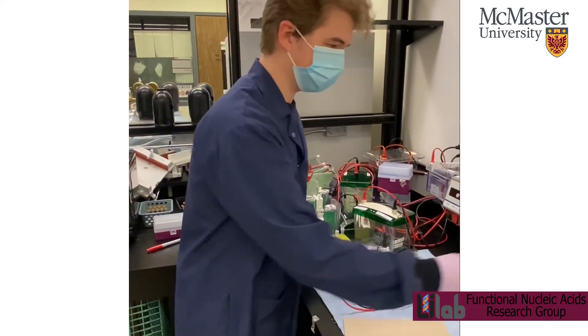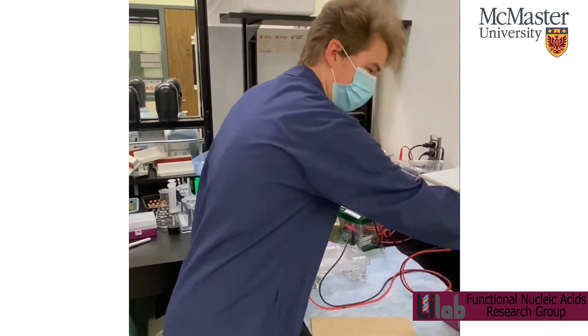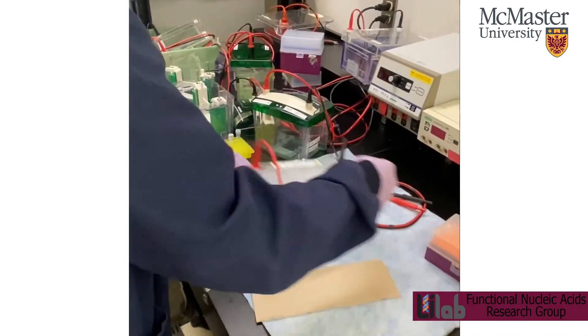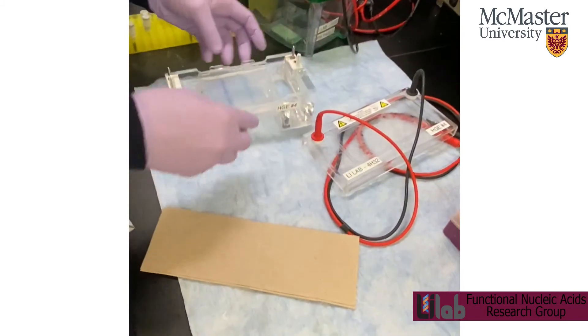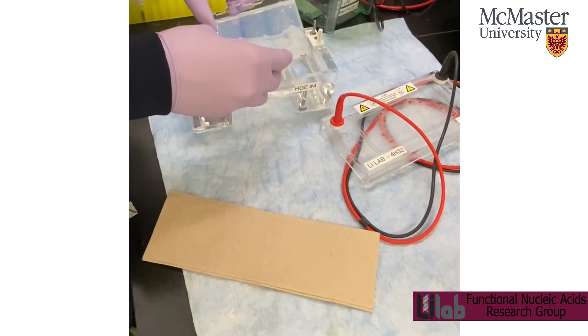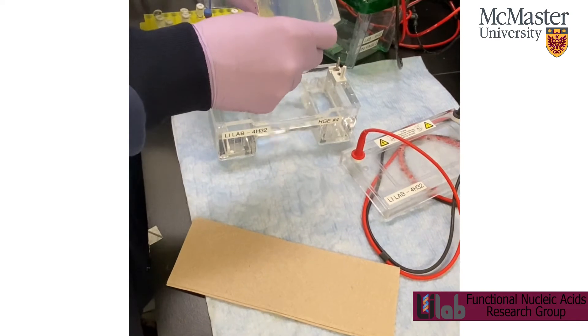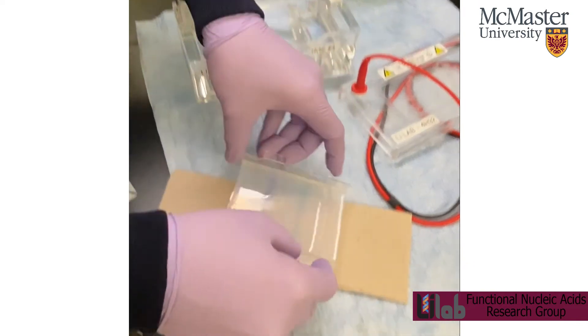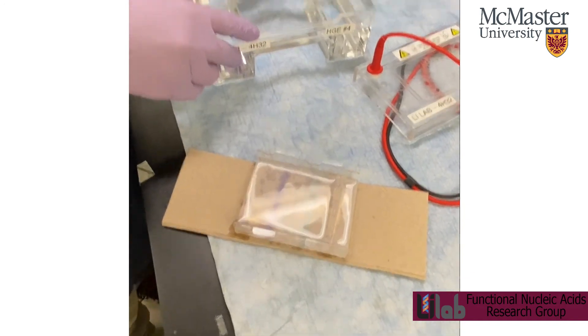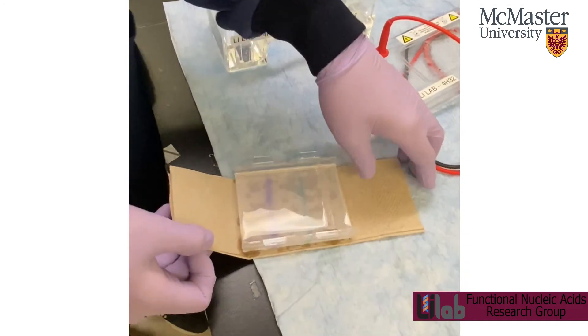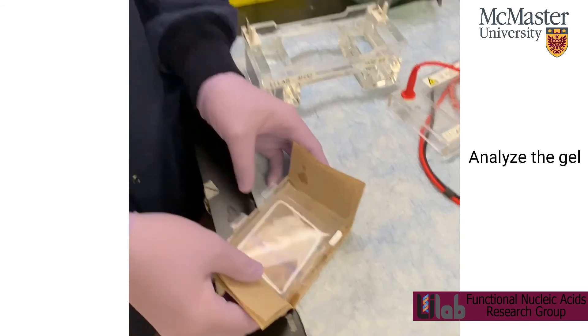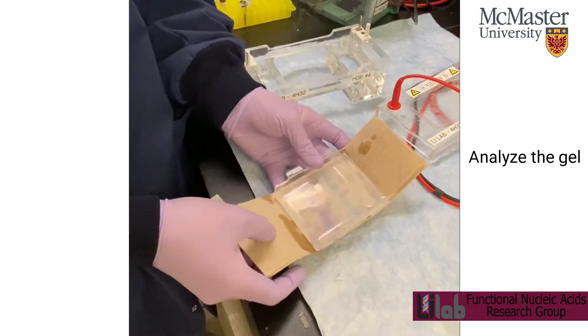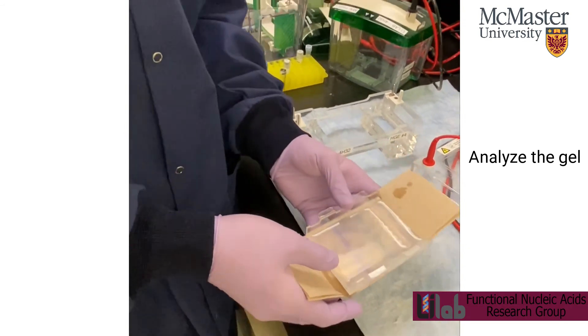Okay, so when your gel is done, you can turn it off. And then unplug the leads. And you can remove your gel from the apparatus. Just drain some of the buffer. And then this can just go down the sink and rinse with water. And then the gel itself you can analyze either in the Typhoon in the CMCB or in the blue light in the darkroom. So I can show you what it would look like under the blue light.